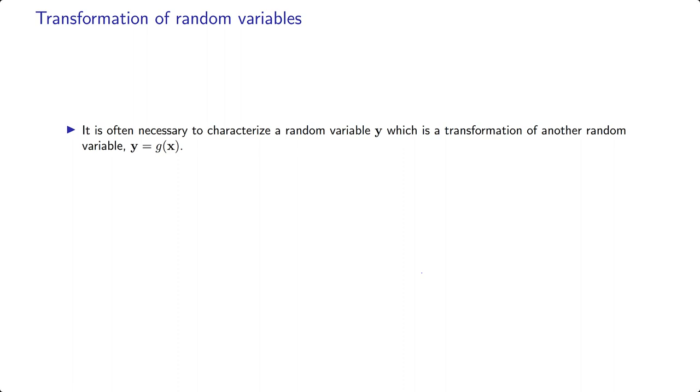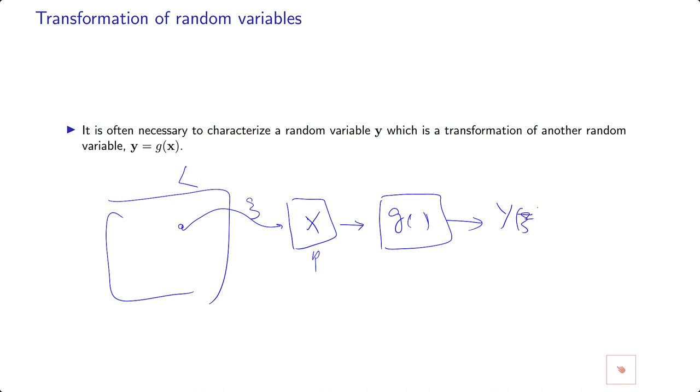Here we have a random variable X and a function G, and then you have another output Y. This is your sampling space producing a random experimental output that goes to this first function, which is a random variable. This is the second function, which is a function of a function, and Y of ζ equals G of X of ζ.